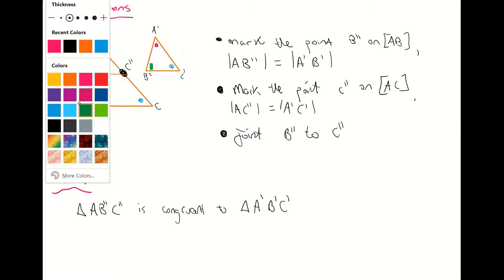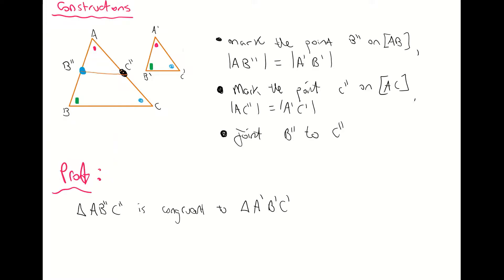I'm basically going to make statements with reasons, just as we did with congruent triangles. Why are those two triangles congruent? We could use side-angle-side. We can't use the three angles, but I could use the side AB'' corresponding to A'B'. That's one way we could do it — side, angle, side.